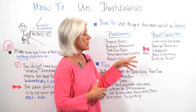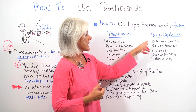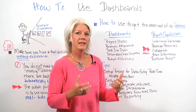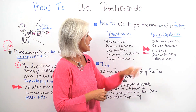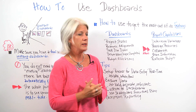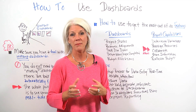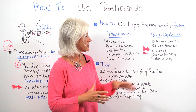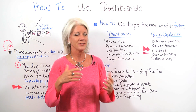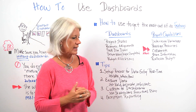Once you have your dashboard, it allows you these project capabilities: it allows you to determine variances between your scope, your timeline, and your budget. It also allows you to reassign resources by seeing who is assigned to what, collaborate among different team members and share information helpful for making decisions and determining risk, and reallocate your budget.